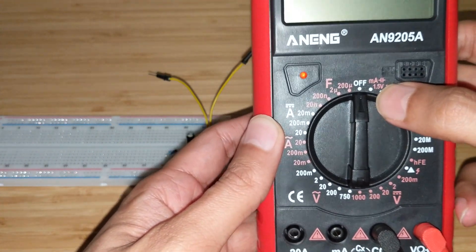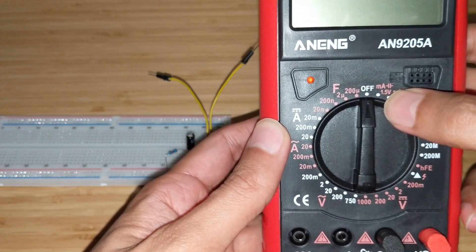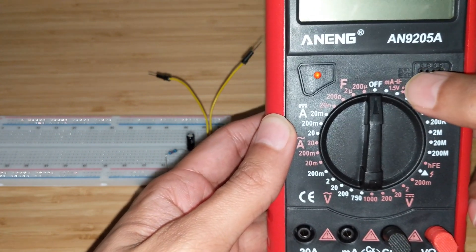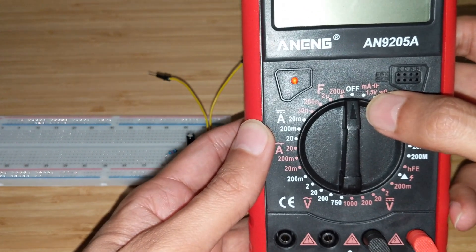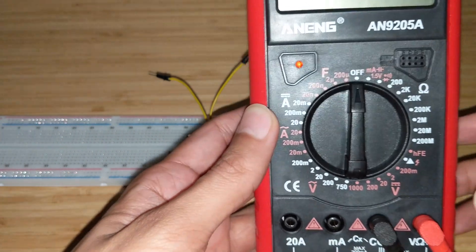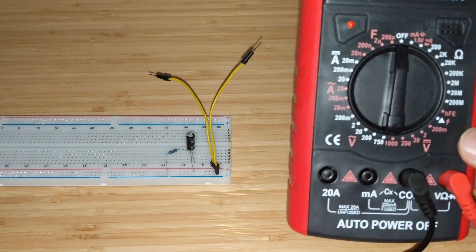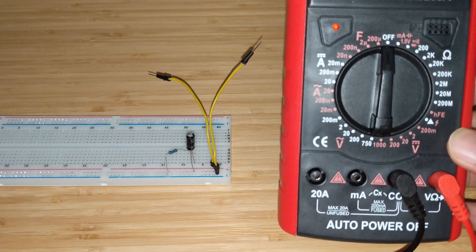When I was going through all the options, I noticed this option right here. It says milliamperes, it has a capacitance symbol and 1.5 volts. So not exactly sure what it does.